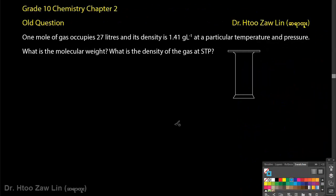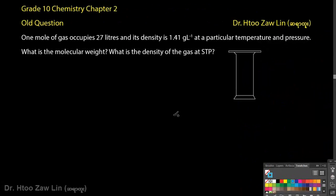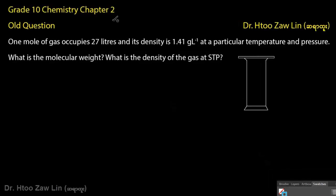My name is Craig Dan, Chemistry Chapter 2. One mole of gas occupies 27 liters, and its density is 1.41 gram per liter at a particular temperature and pressure. What is the molecular weight? What is the density of the gas at STP?